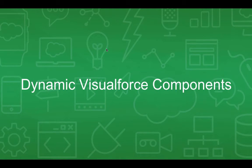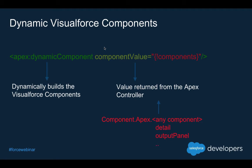I talked a lot about JavaScript for about 40 minutes; now I want to switch gears and talk about dynamic Visualforce components — a concept that has been around for a while and is very powerful. In Visualforce we have the ability to build a component in Apex — like an input text, output text, or output panel — using standard classes and then push that component to Visualforce dynamically at runtime. The tag is apex:dynamicComponent and the componentValue is the value you are building in the Apex controller.